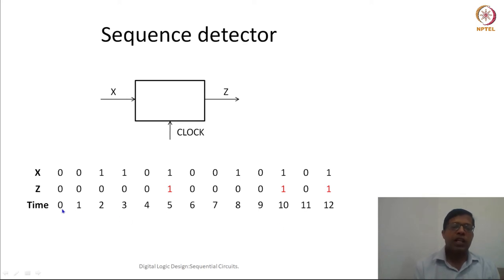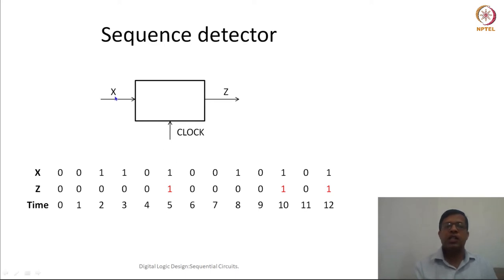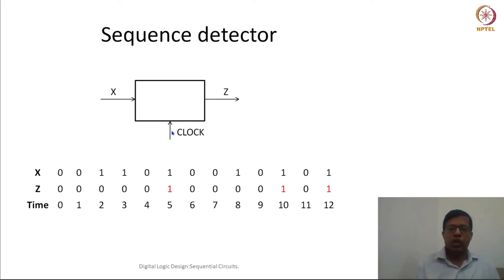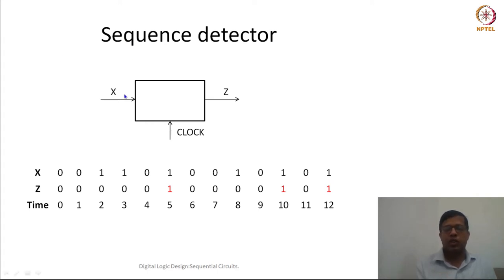When we say time, we are assuming that x would be stable for one whole clock period and would change only when the clock changes — specifically at the positive edge. After the positive edge, x will change and remain at a constant value: if it is 0 it will remain 0, if it is 1 it will remain 1. Now the sequence we are detecting is actually 1, 0, 1.